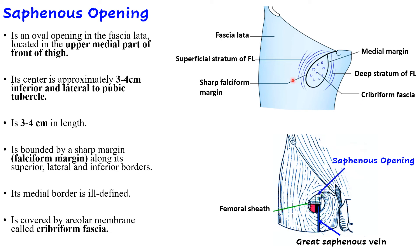To summarize the saphenous opening: it is oval in shape, located in the upper medial part of the front of thigh, 3 to 4 cm inferolateral to the pubic tubercle, and 3 to 4 cm in length. The superior, lateral, and inferior margins are sharp; the medial margin is not well marked. The gap is bridged by the cribriform fascia.